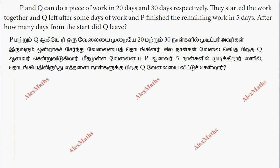Hi students, this is Alex. Here's the problem: P and Q can do a piece of work in 20 days and 30 days respectively. One day work of P and one day work of Q.